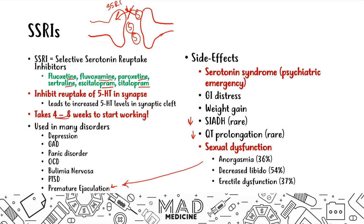Quick recap: SSRIs block the reuptake of serotonin, take about four weeks to start working, and can be used in the majority of psych cases. The key things to watch out for on Step 1 are serotonin syndrome — similar to a carcinoid tumor, with symptoms like flushing and diarrhea — and sexual dysfunction, which is a very common side effect.